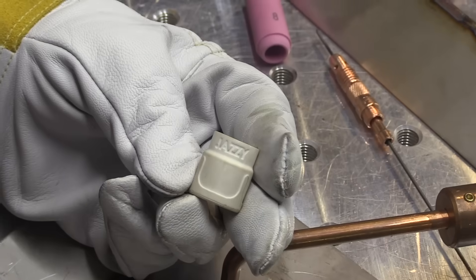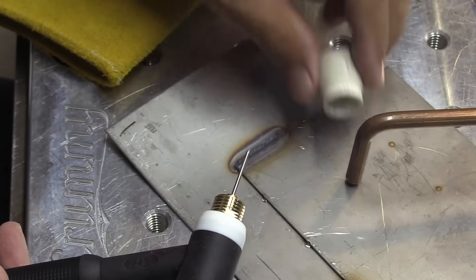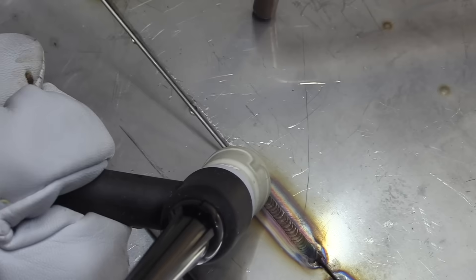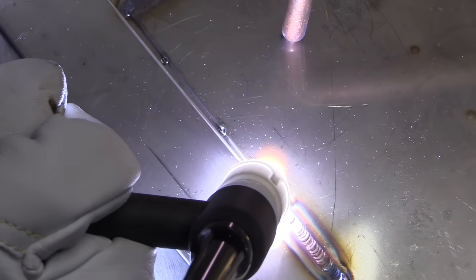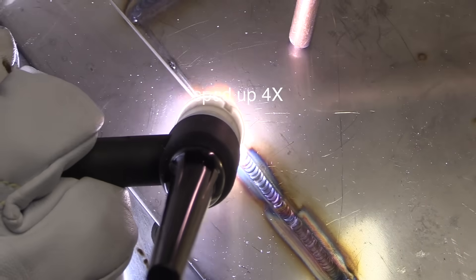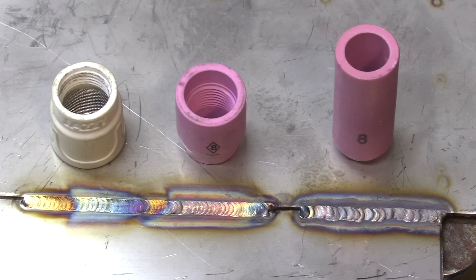Same stick out, went to a stubby gas lens number 8 cup, same gas—way way better. You can also stick a Jazzy 10 ceramic onto a stubby gas lens, same gas flow, same stick out, and get even better results.